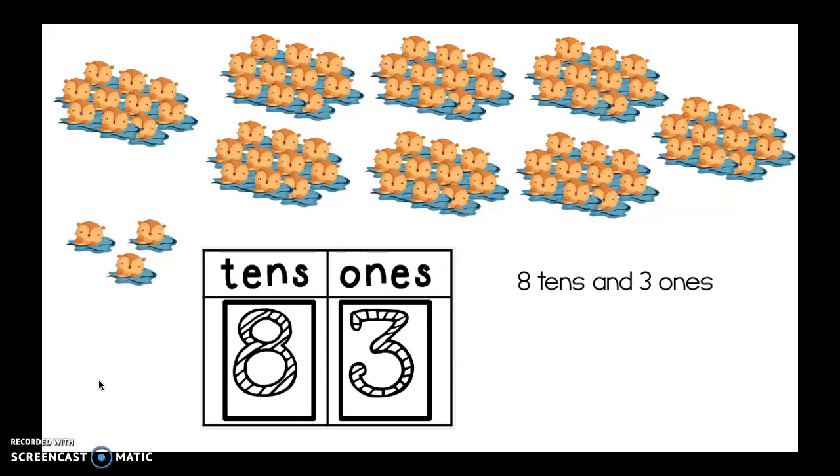Can you think of a number sentence where I would add those two numbers together? What would that look like? Well, eight tens is actually 80. So I could say 80 plus three. And then how do I say eight tens and three ones the regular way? Yeah, you're right. Eighty-three.